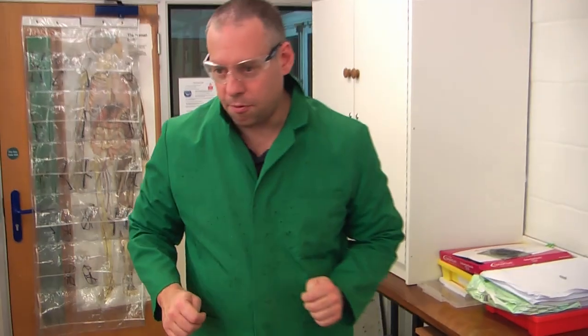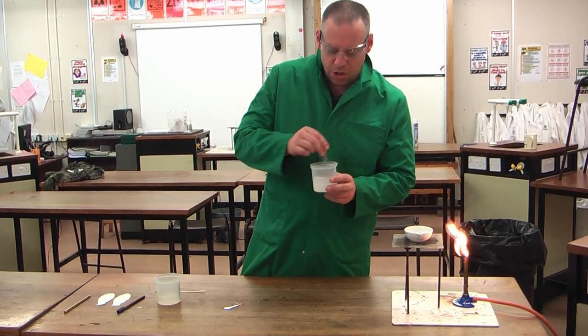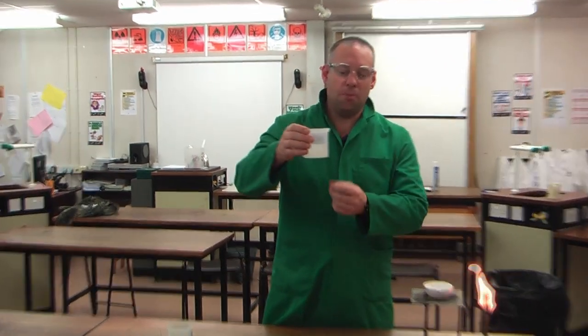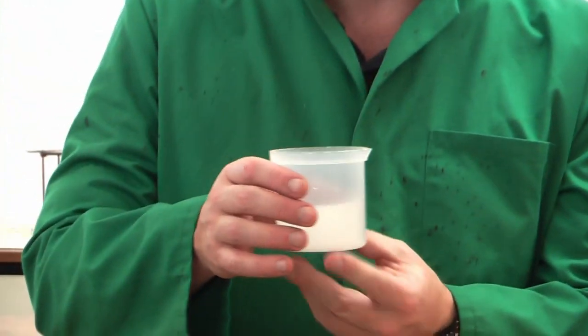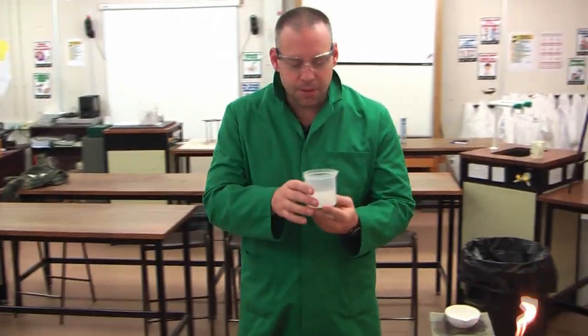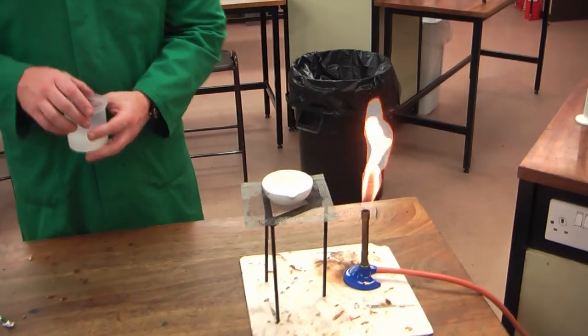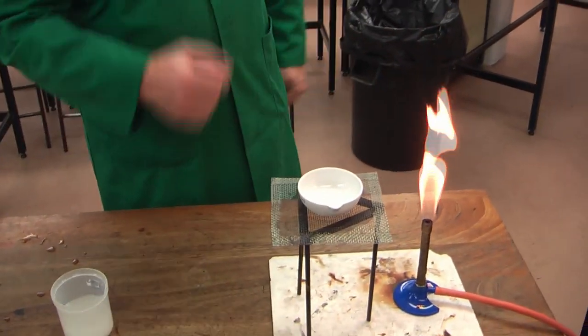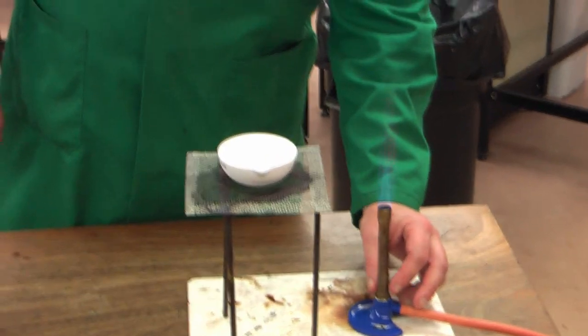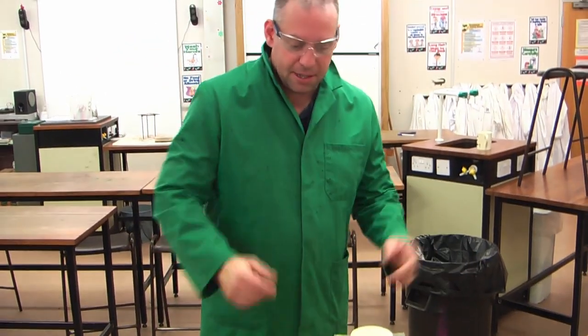So technique number four. And technique number five. Here I've got some salt and some water. So what do we do if we've got a solution of a solvent and a soluble solute? So in this case I want to separate these two. Now the technique you use is going to depend whether you want to get the water or the salt back. So this particular technique I'm aiming to get the salt back, not the water. So what I want to do is I want to make the water disappear.